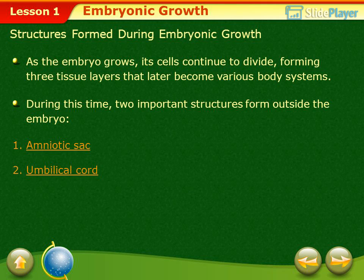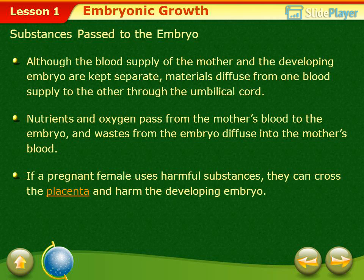The amniotic sac and umbilical cord form during embryonic growth. Although the blood supply of the mother and the developing embryo are kept separate, materials diffuse from one blood supply to the other through the umbilical cord. Nutrients and oxygen pass from the mother's blood to the embryo, and waste from the embryo diffuses to the mother's blood. If a pregnant female uses harmful substances, they can cross the placenta and harm the developing embryo.